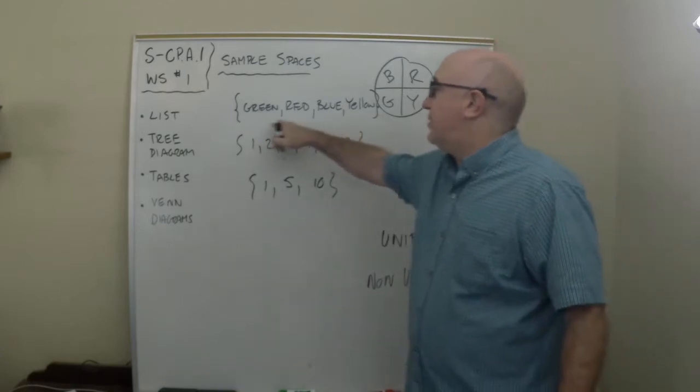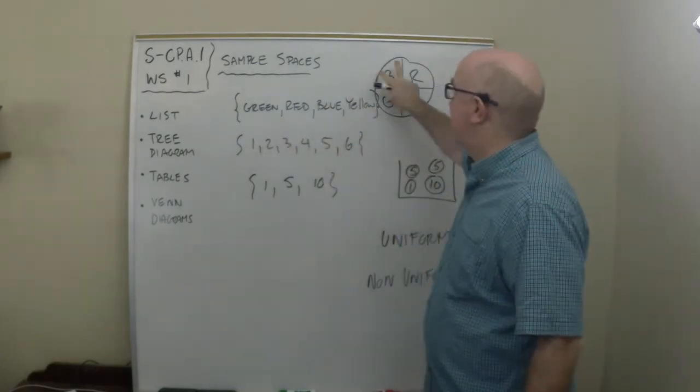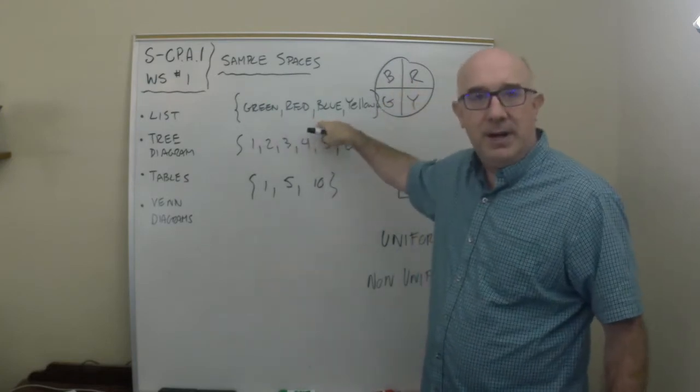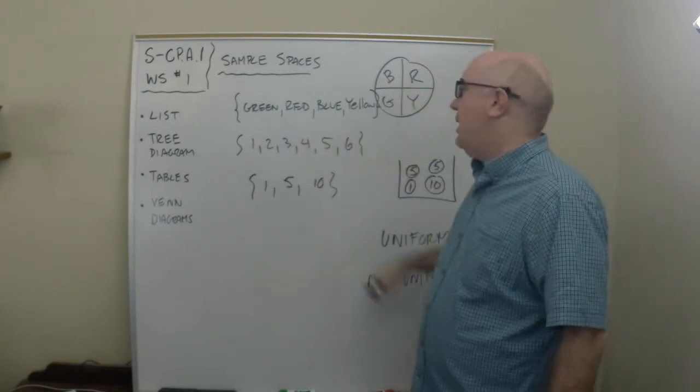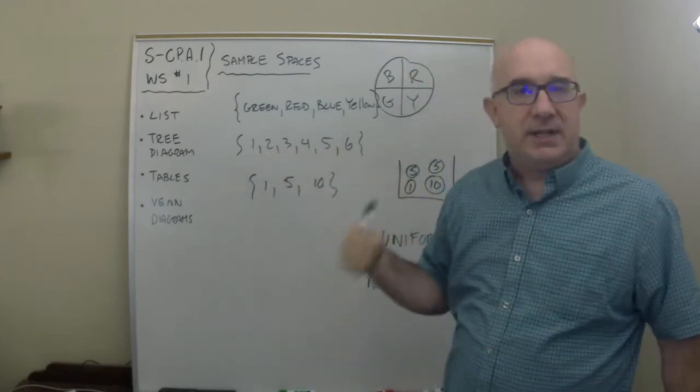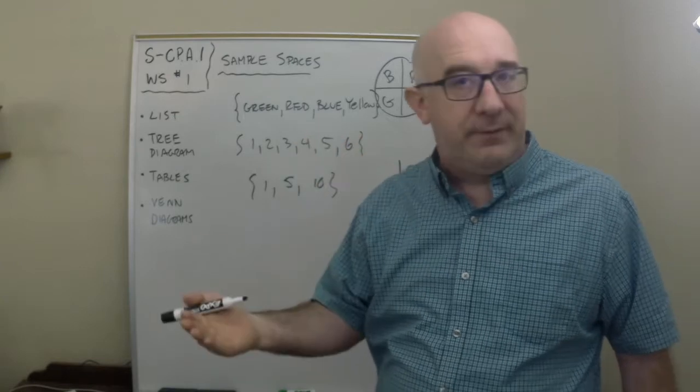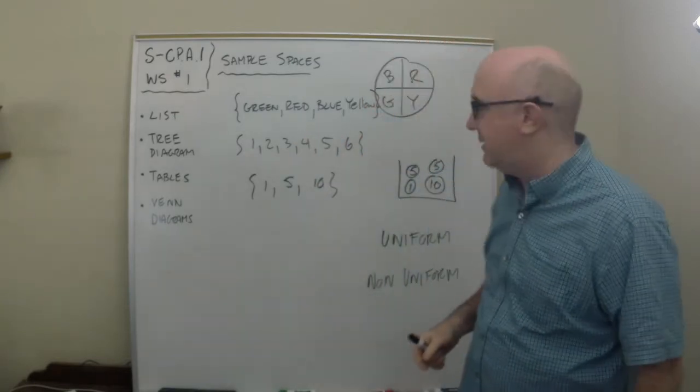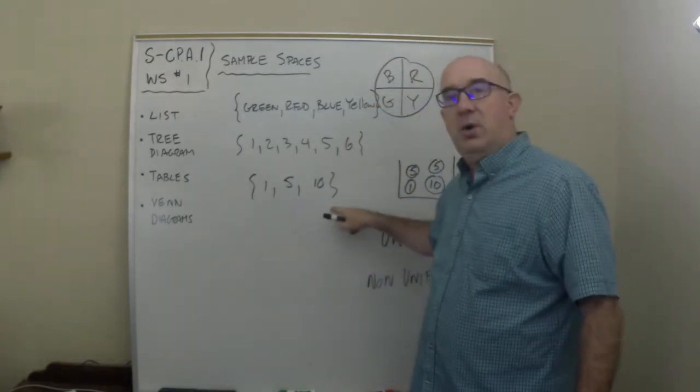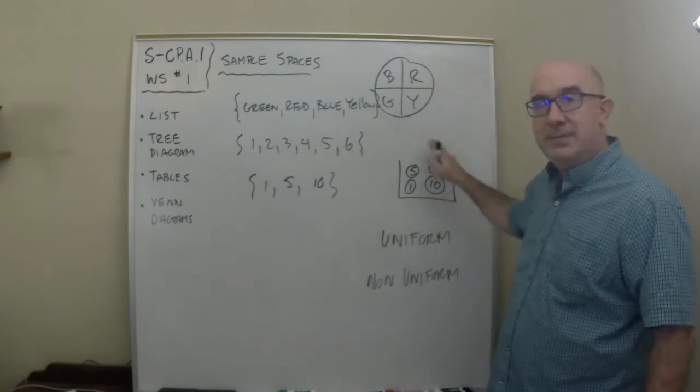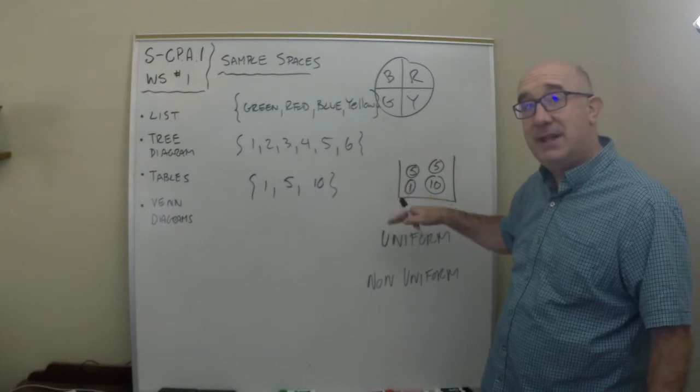So in the first case this would be uniform because this says one-fourth, one-fourth, one-fourth, one-fourth. This would be a uniform arrangement. When you roll a dice there is six sides. There is one number on each side. There is a uniform probability to that.